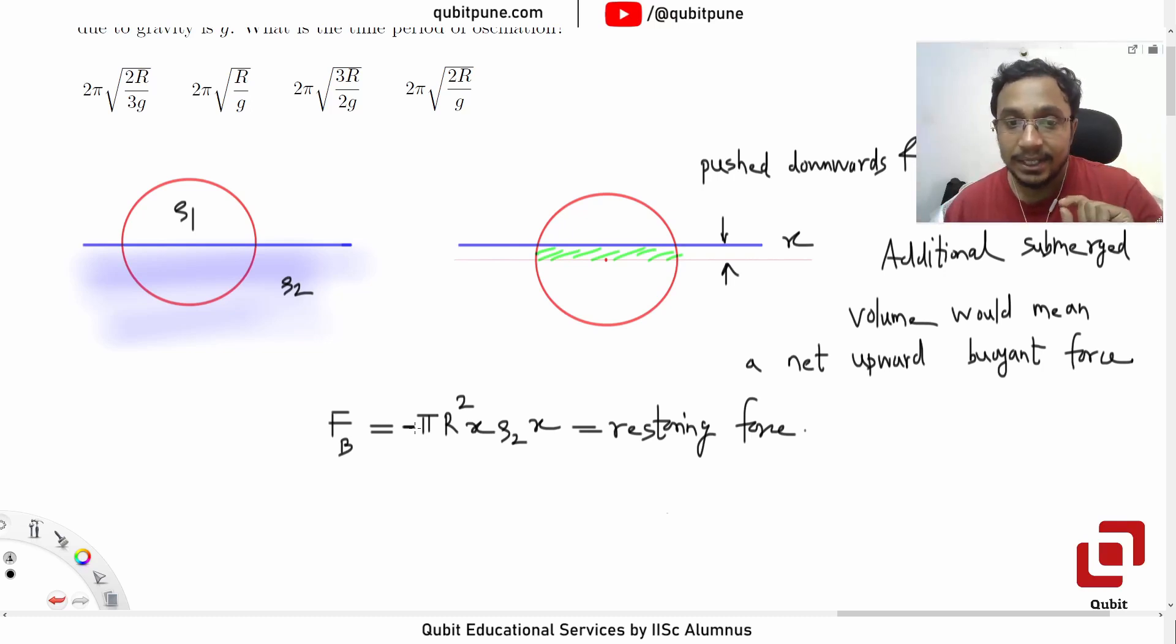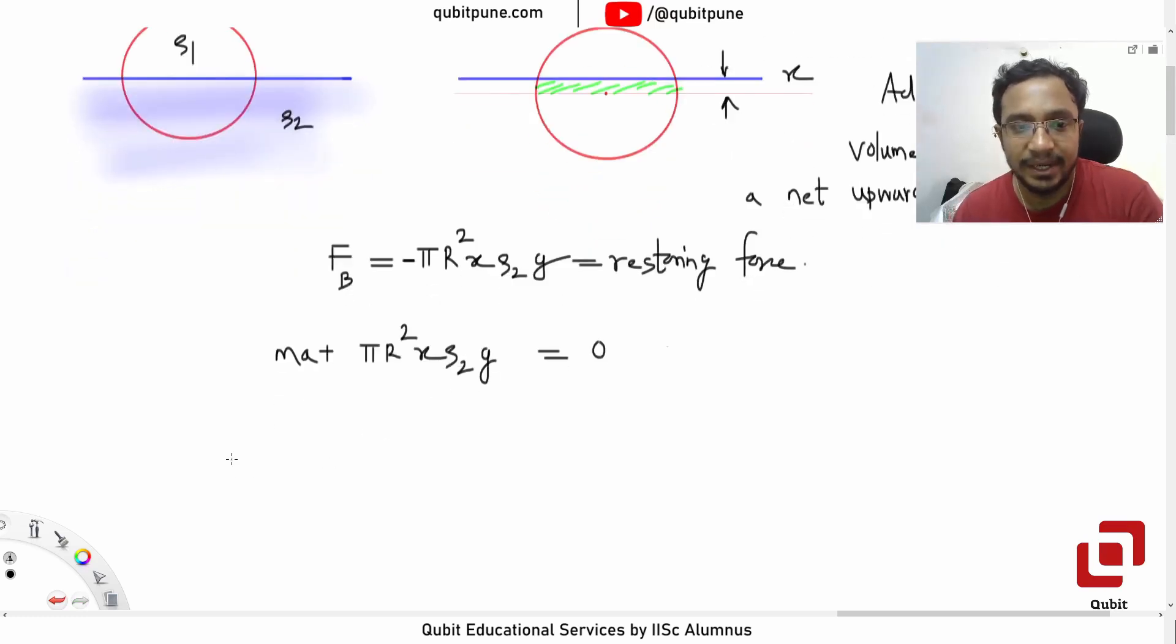When x is positive, FB is negative, and when x is negative, FB is positive. So ma + πr²x·ρ₂g = 0. You get the differential equation, so you can directly say that the natural frequency is √(k/m).